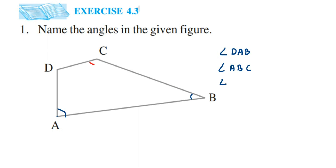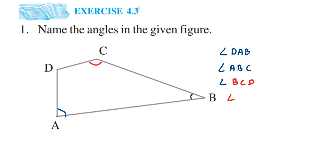Next, for vertex C, I have two sides: CD and CB — those are the two arms. So you can write it as angle BCD or DCB. So this is angle BCD.